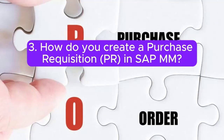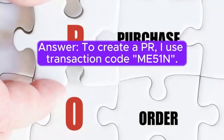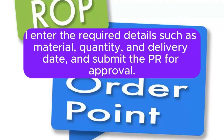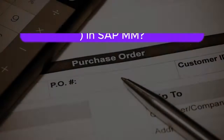Question 3: How do you create a purchase requisition (PR) in SAP MM? Answer: To create a PR, I use transaction code ME51N. I enter the required details such as material, quantity, and delivery date, and submit the PR for approval.